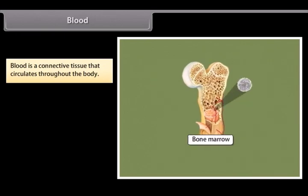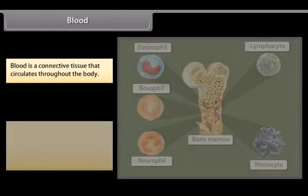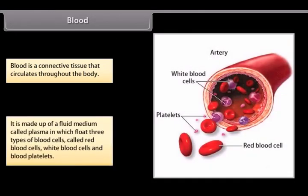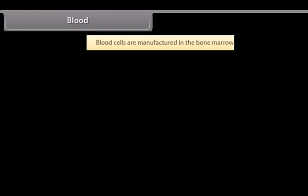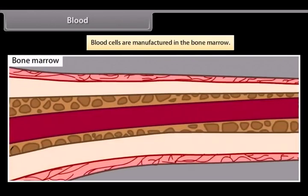Blood. Blood is a connective tissue that circulates throughout the body. It is made up of a fluid medium called plasma in which float three types of blood cells called red blood cells, white blood cells and blood platelets. Blood cells are manufactured in the bone marrow.